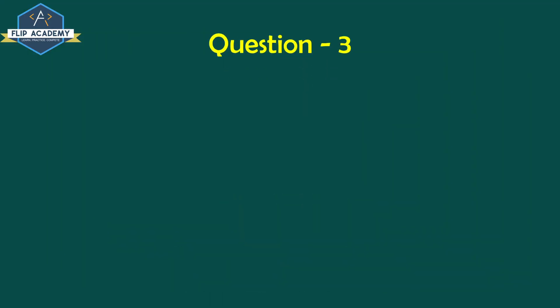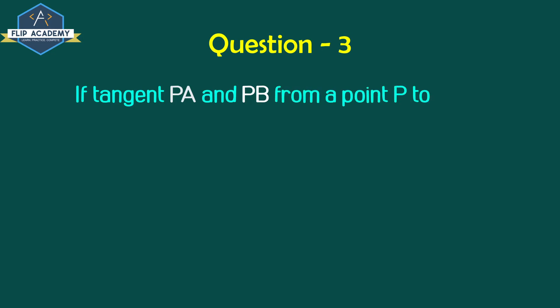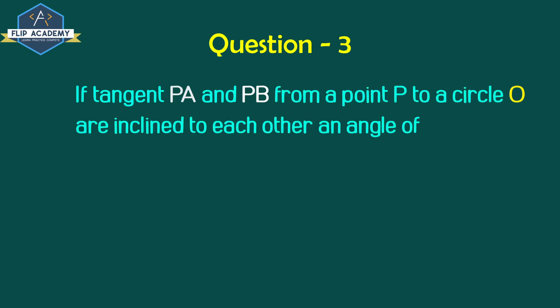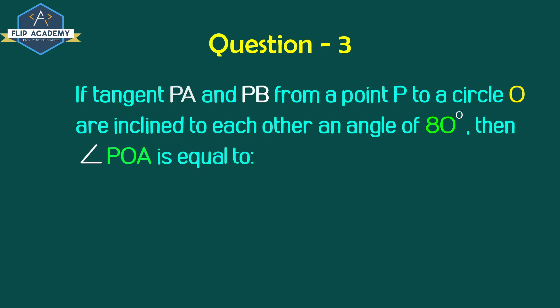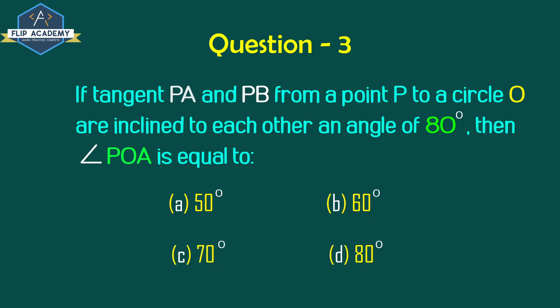Circles exercise 10.2, question number 3. If tangents PA and PB from a point P to a circle with center O are inclined to each other at an angle of 80 degrees, then angle POA is equal to: option A 50°, option B 60°, option C 70°, option D 80°.